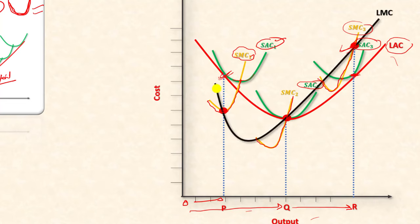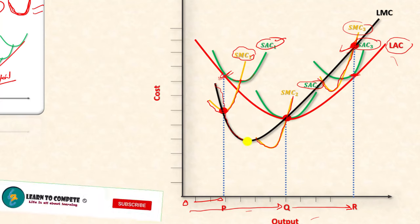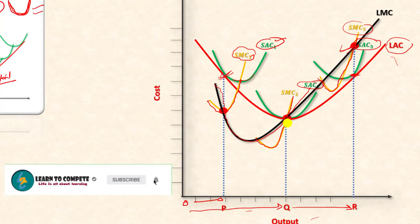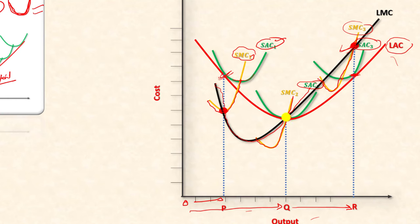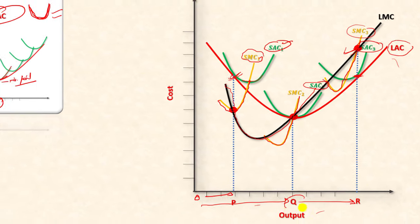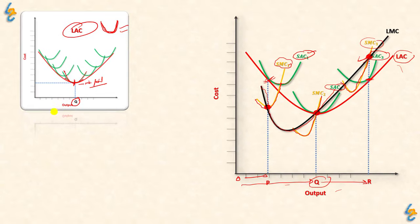The long run marginal cost curve is first downward sloping and then upward sloping, cutting the long run average cost curve at its minimum point. The optimal output is where the long run average cost curve is at its minimum. At this optimum output, the short run average cost equals the long run average cost.